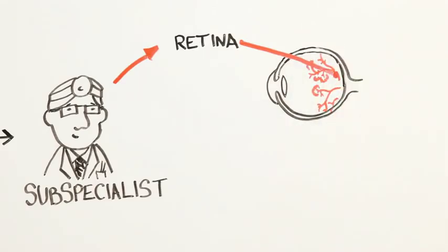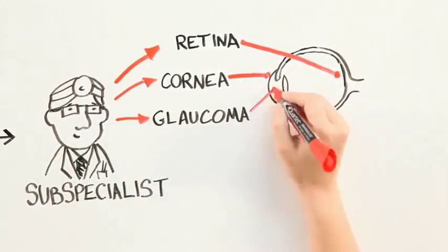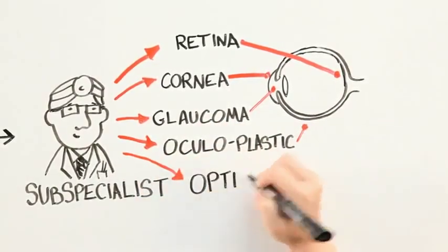Other MDs can subspecialize in other parts of the eye. So there are cornea specialists, glaucoma specialists, oculoplastic specialists, there is even a specialist for the optic nerve.